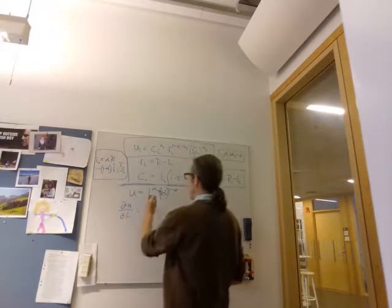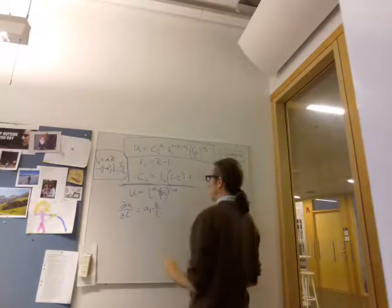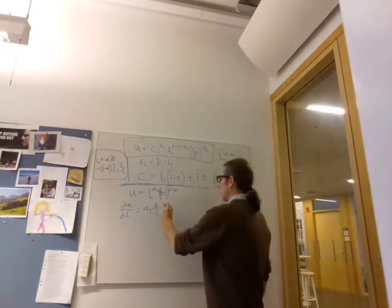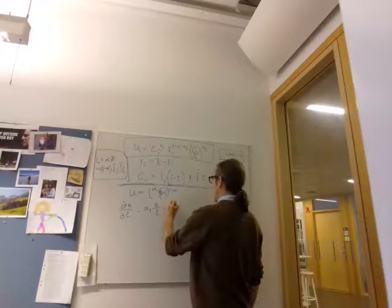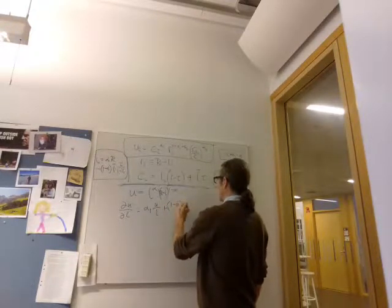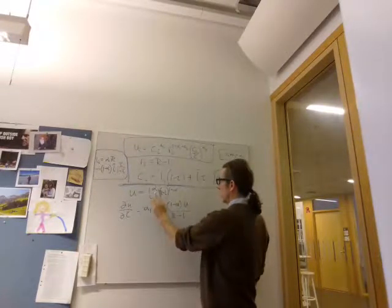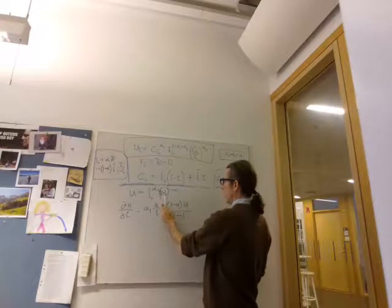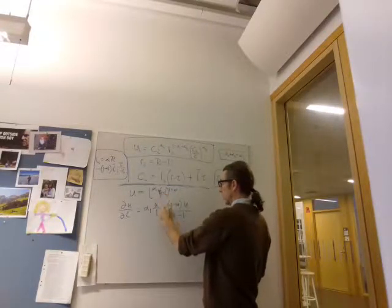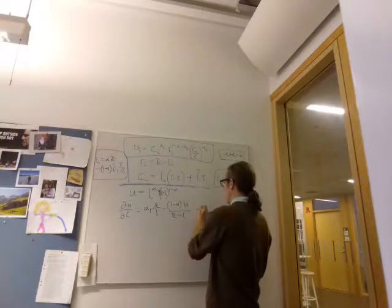dU/dL is alpha 1 U over L plus 1 minus alpha U over R minus L. 1 minus alpha times everything over R minus L, and then we go inside and differentiate and get a minus sign.